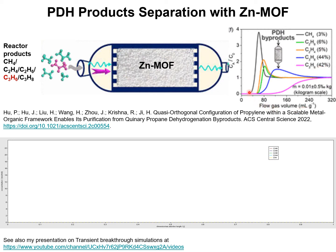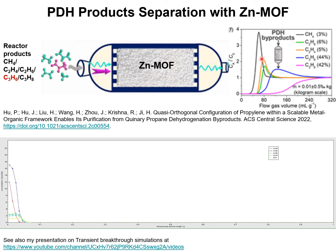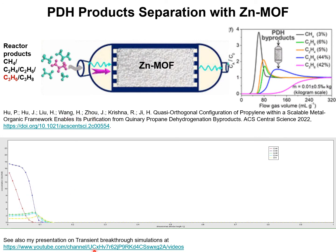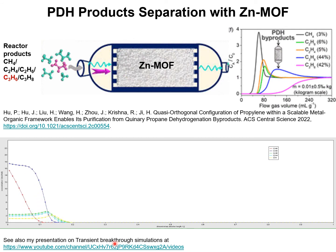The first component to break through is methane and the last component to break through is the desired product, propylene. What is also remarkable is that the experimental data on transient breakthroughs shown here can be matched nearly quantitatively using transient breakthrough simulations, with the methodology described in my YouTube channel presentation.